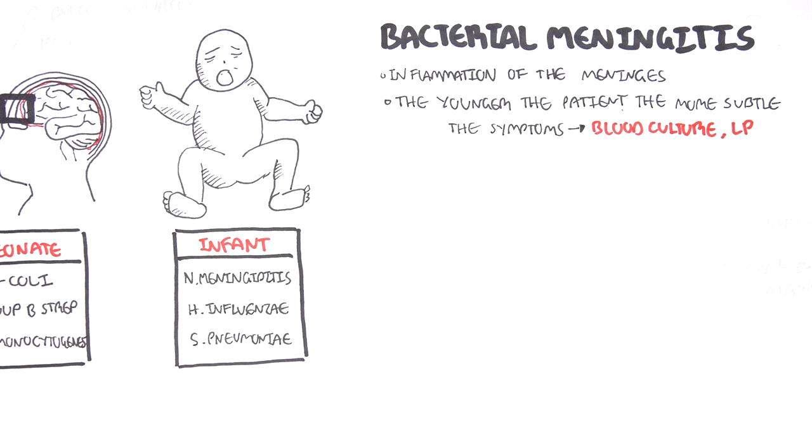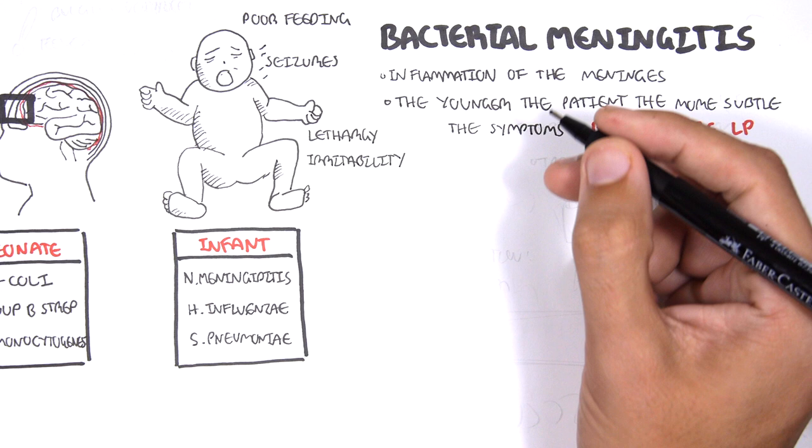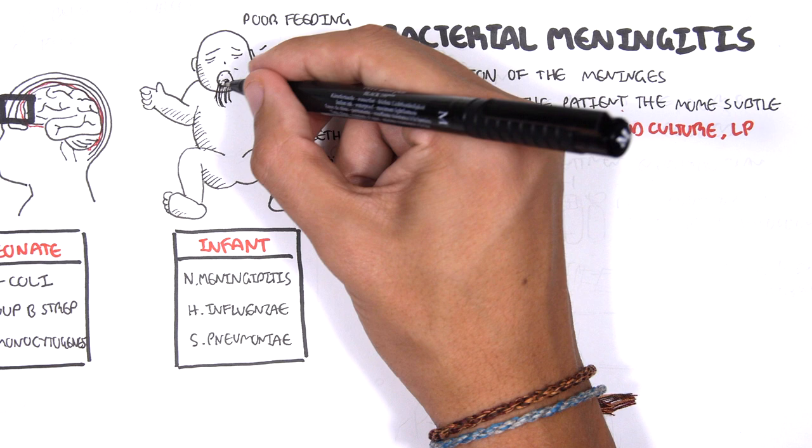The signs and symptoms of bacterial meningitis include poor feeding, seizures, lethargy, irritability, high-pitched cry, bulging of the fontanelles because of increased intracranial pressure, fever, apnea, and vomiting.